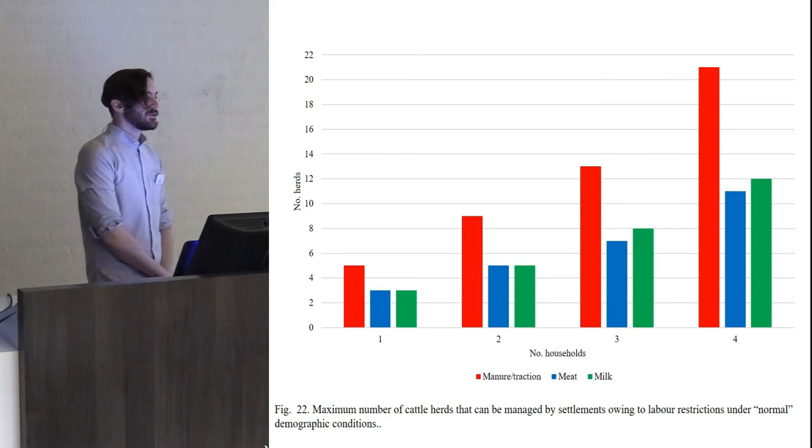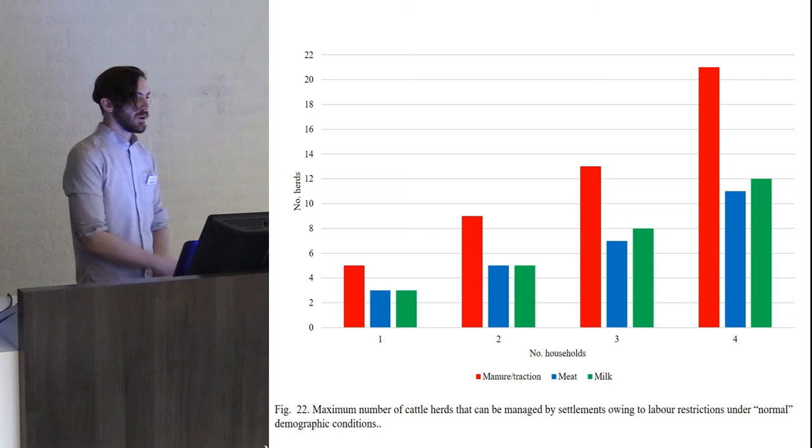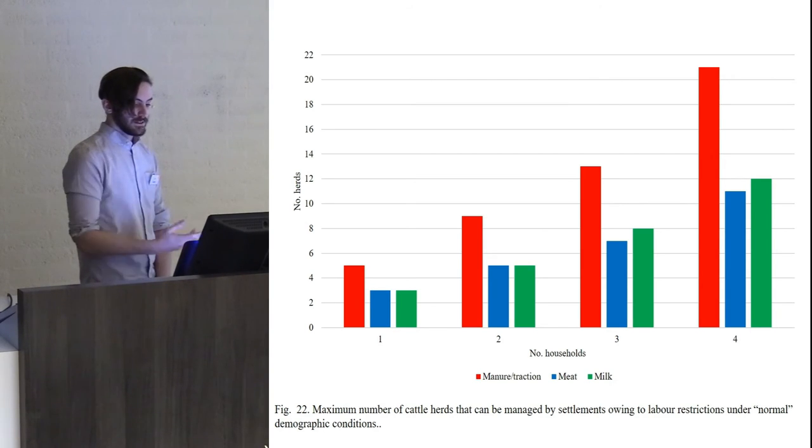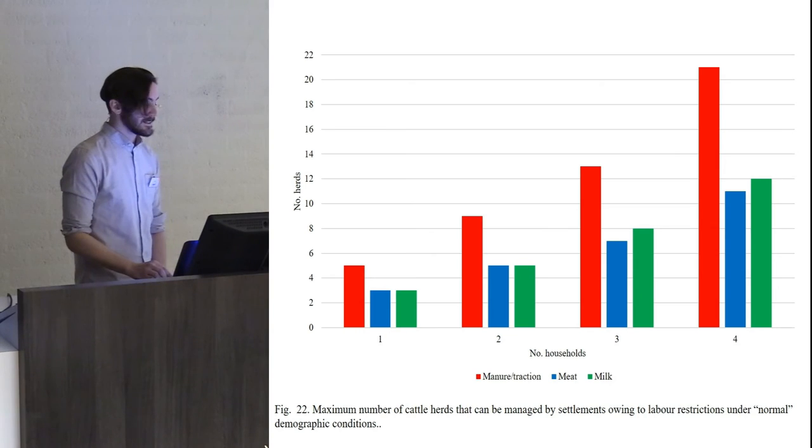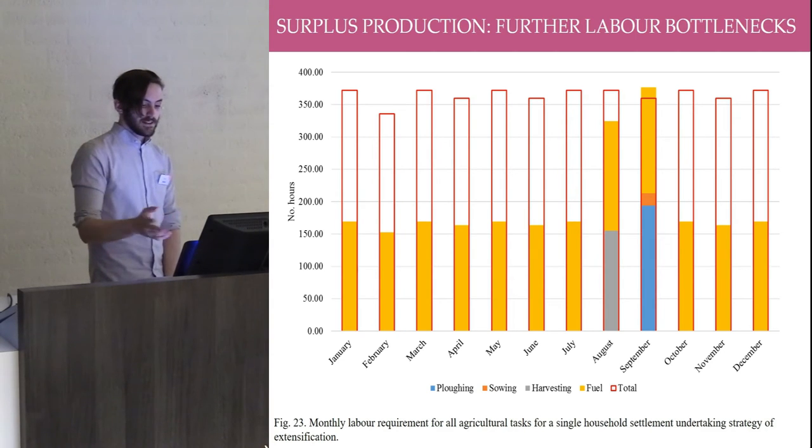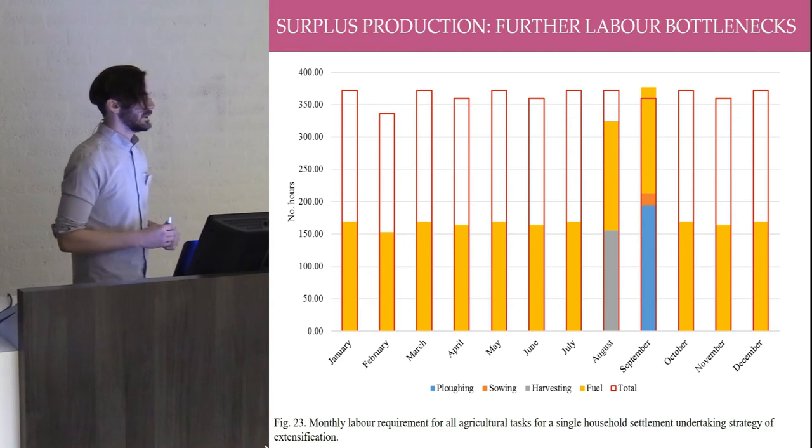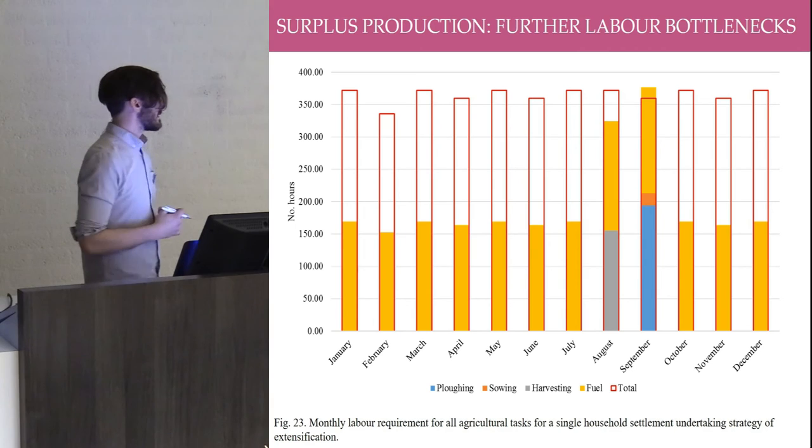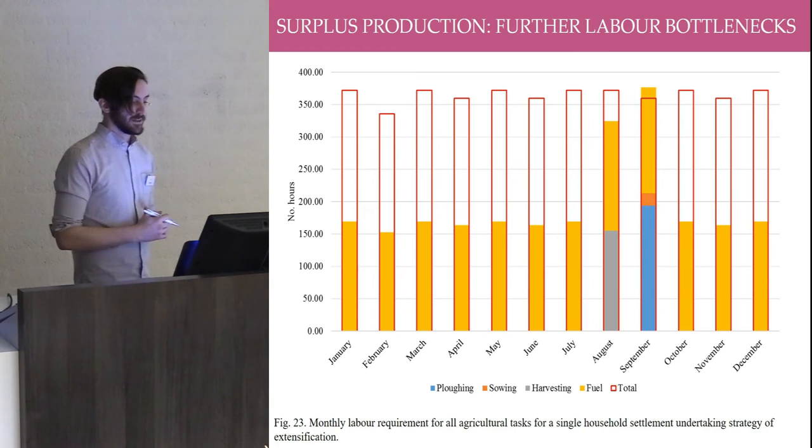There's also potential for surplus meat production, provided that settlements keep multiple herds, two to three herds, and we start getting a small surplus. For one household, this may reach the upper limit of how many herds can be kept according to the restrictions of labour. But for a larger household, then this falls well below the maximum number they can keep. Once again, under extensification in September we see a further bottleneck. Again, if a single household loses one member of its workforce, then they have troubles in September fulfilling their agricultural tasks.